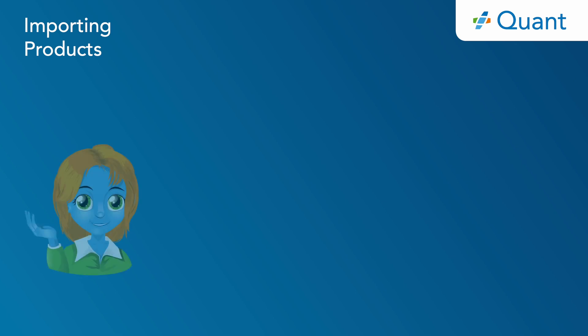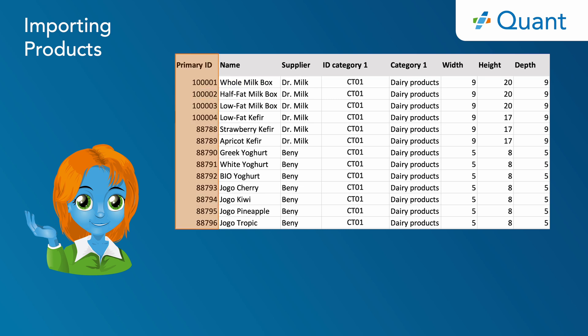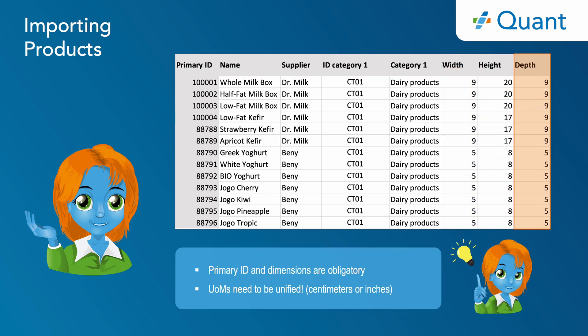Importing products. First of all, I'd like to remind you to have an Excel or CSV file with your products and the product information ready. Each product represents one line. For each product, its primary ID — its unique product code — has to always be filled in. The file should include the product dimensions: the width, the height and the depth. Please make sure that the dimension units are unified. In our case, all dimensions are in centimeters.